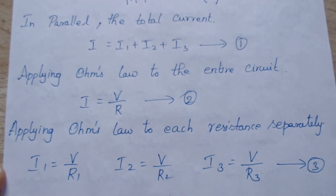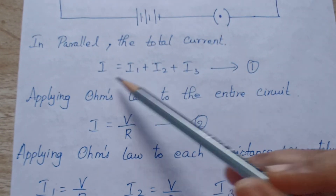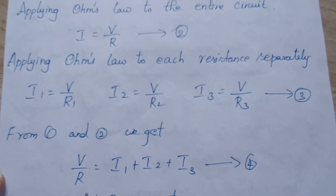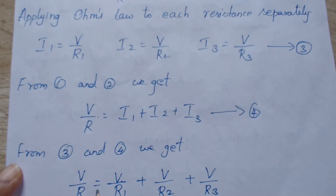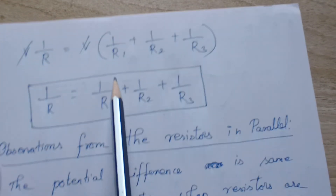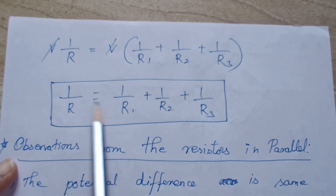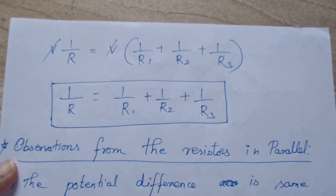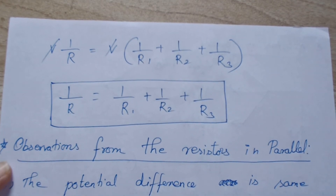Substituting from equations 1 and 2: I equals I1 plus I2 plus I3, and I equals V by R. So V by R equals I1 plus I2 plus I3. Substituting the values: V by R equals V by R1 plus V by R2 plus V by R3. Since V is common in all terms, we cancel it out, giving 1 by R equals 1 by R1 plus 1 by R2 plus 1 by R3. Note: this is the reciprocal of the equivalent resistance, not the direct equivalent resistance.